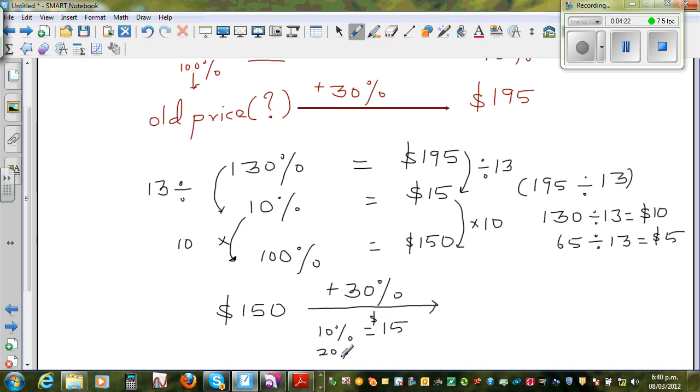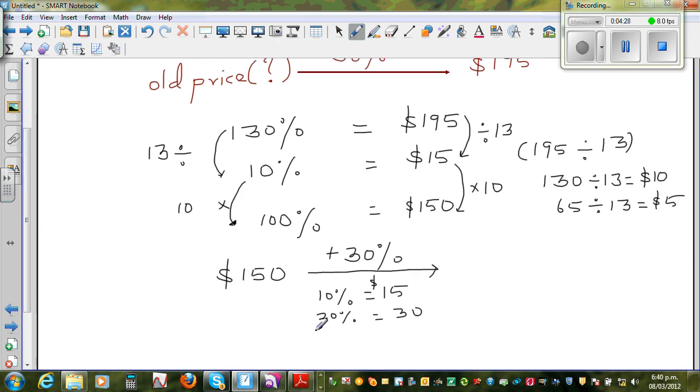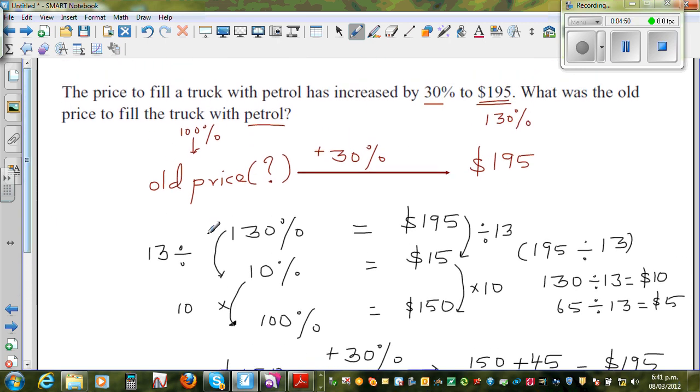So 20% is $30. If you know 10% and 20%, you can find 30%, which is $45. And that does make sense. 150 plus 45 equals $195. So this is how you can find the original amount using ratio and proportion.